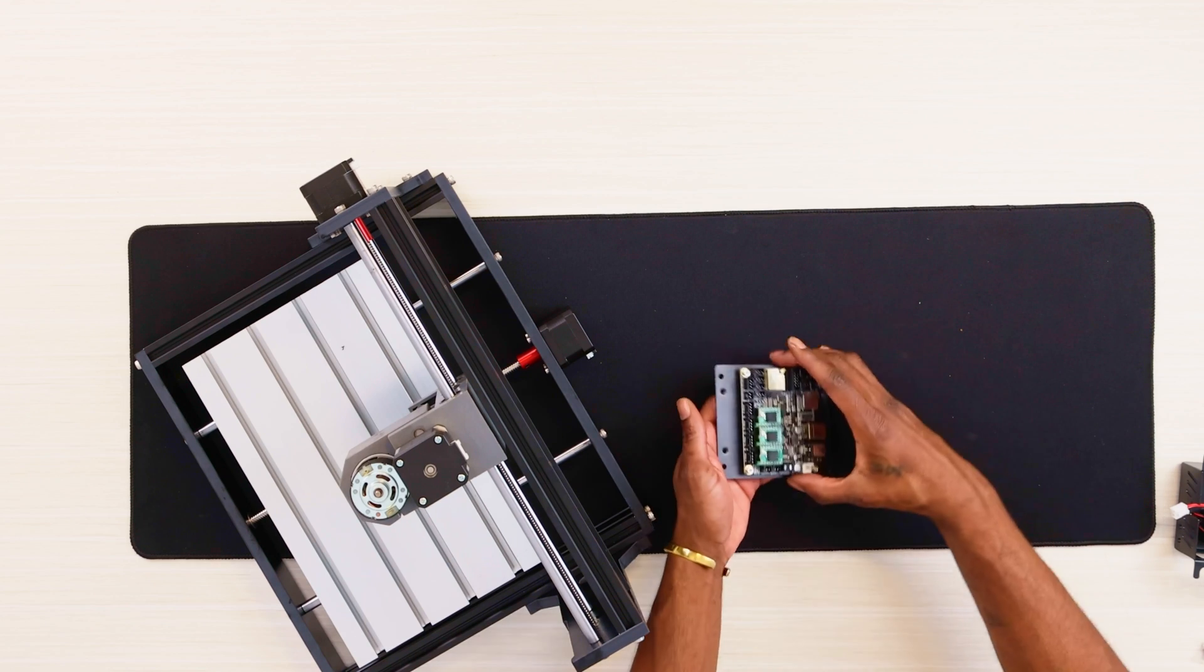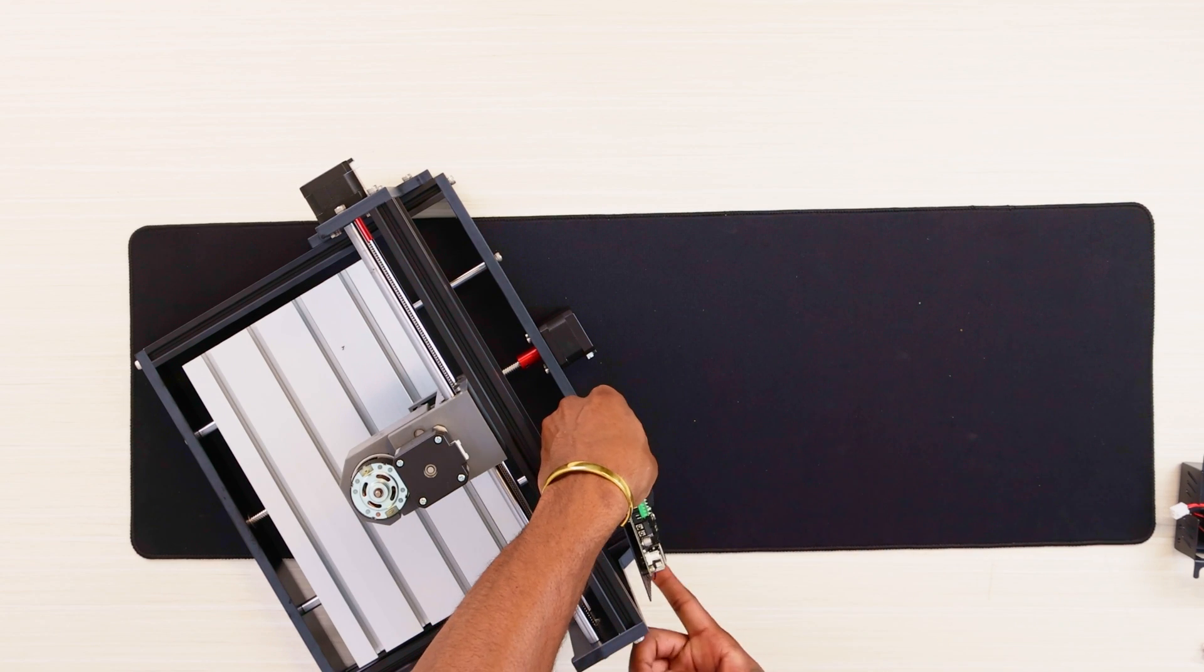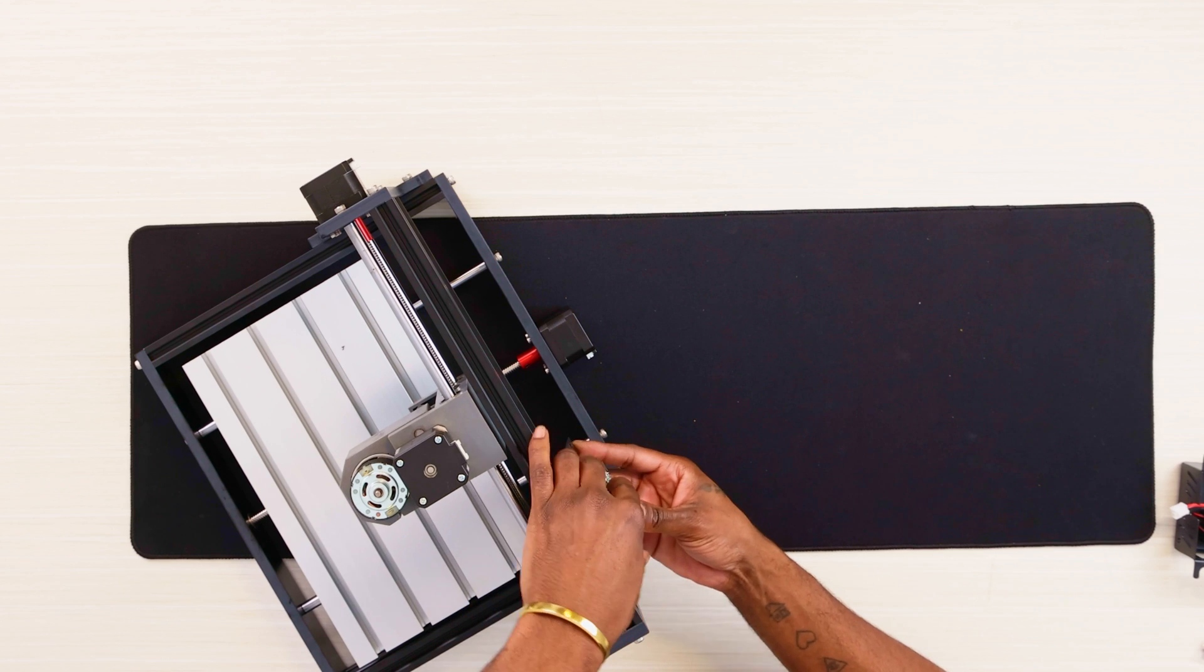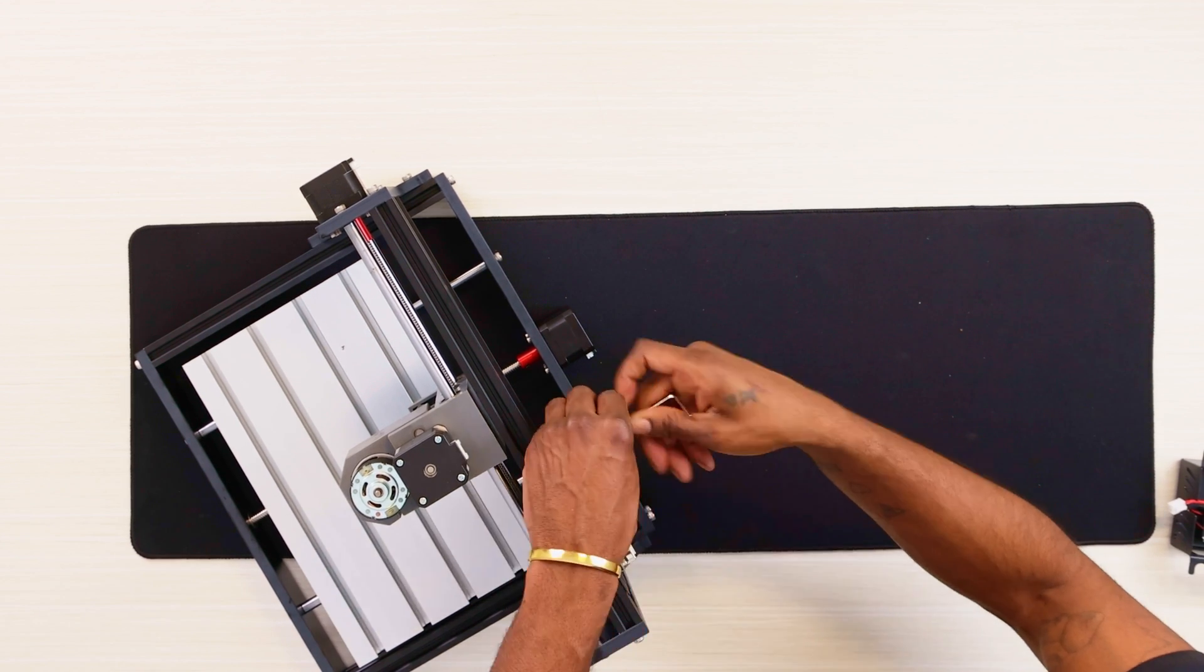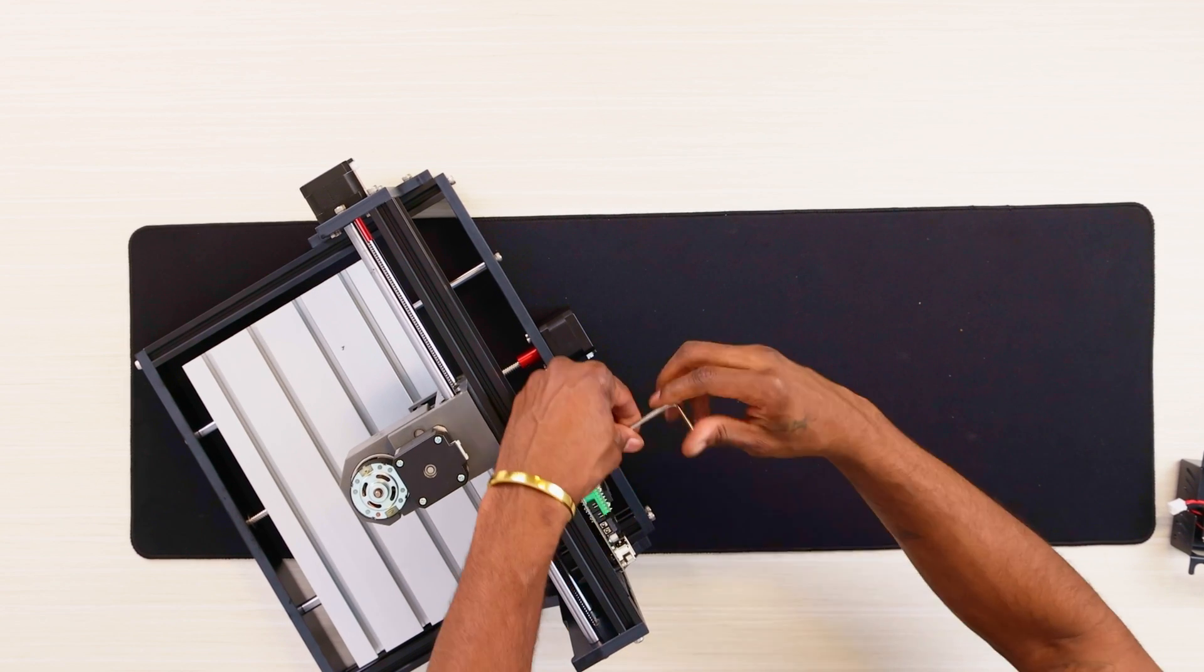Let's now take our motherboard module and position it against the back side of the profiles with the DC connector, USB port, and card reader adjacent to the right plate. Then secure it in place using four M4 by 12 screws.